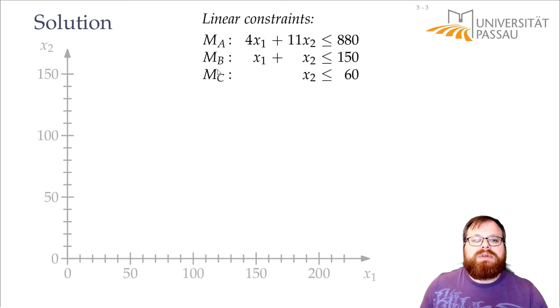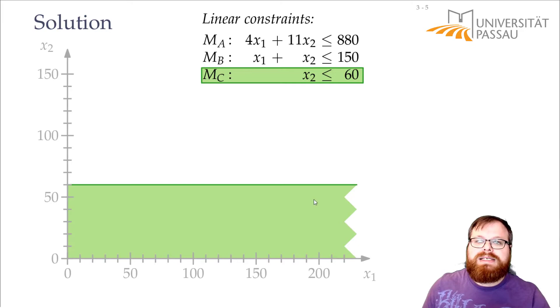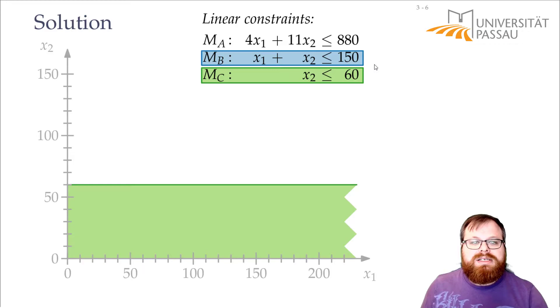And this is what the constraints tell us. So the constraint C tells us at most 60 mice. So we cannot reach any of these points here. The only points that are valid are inside this half plane. Everything that lies at x2 equals 60 or below. And also this constraint. We can have at most 150 in total. So all the points that are valid have to lie in this half plane, below this diagonal.